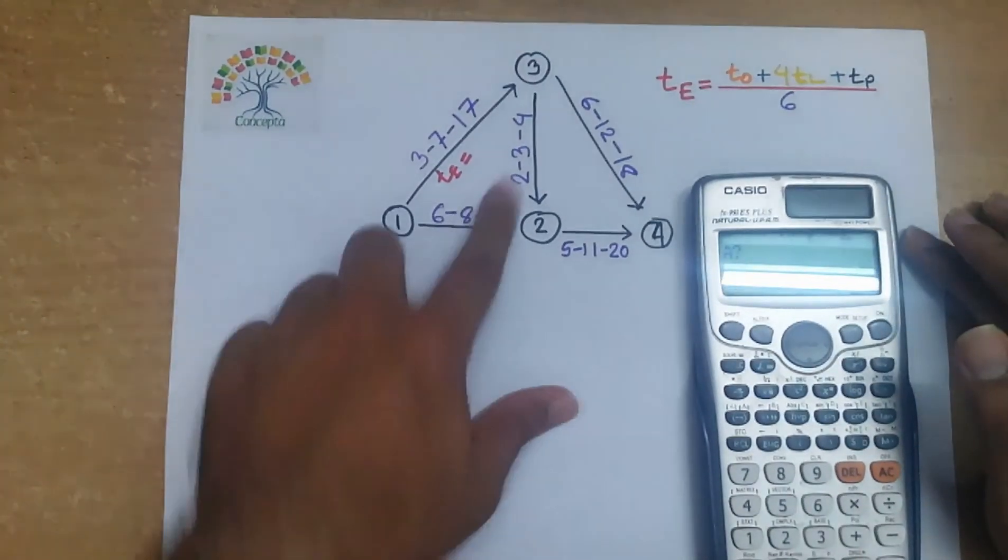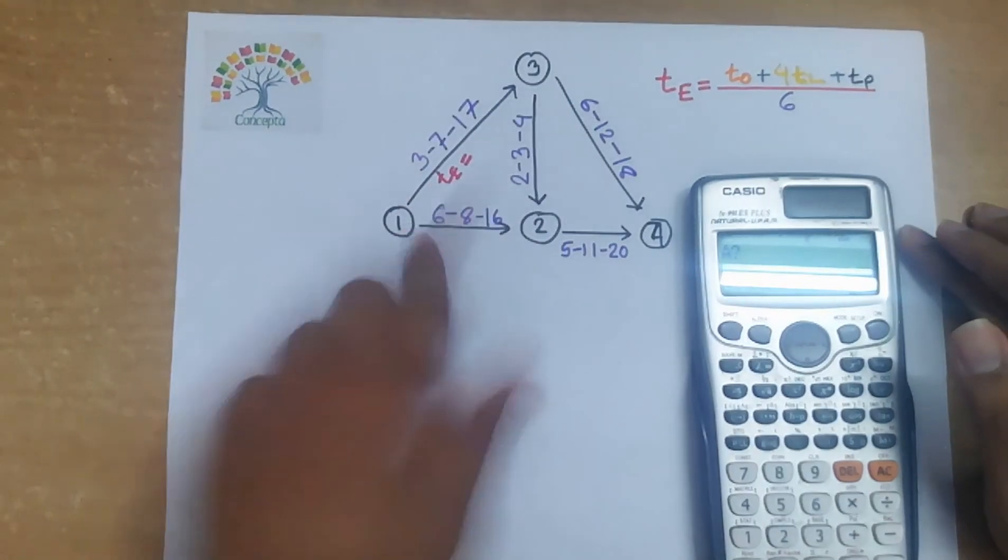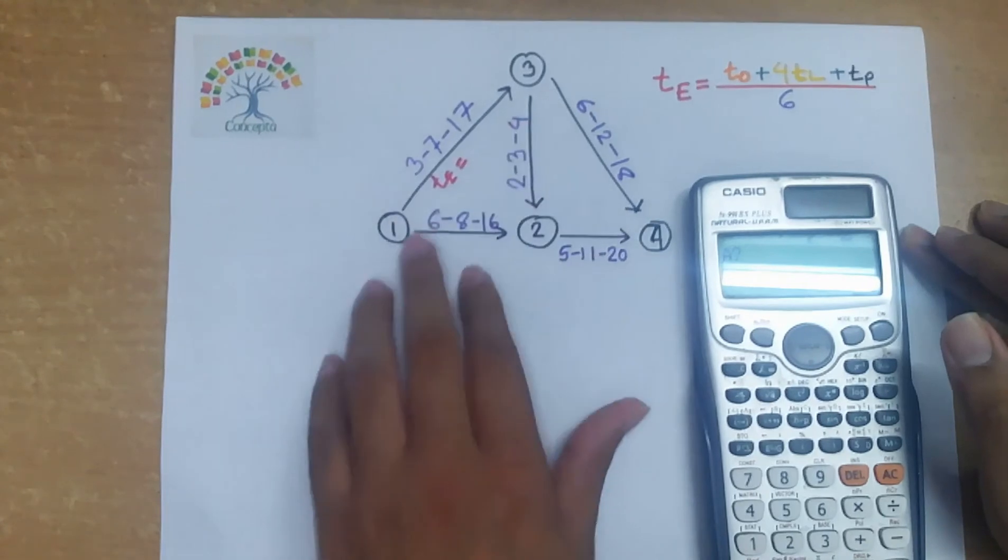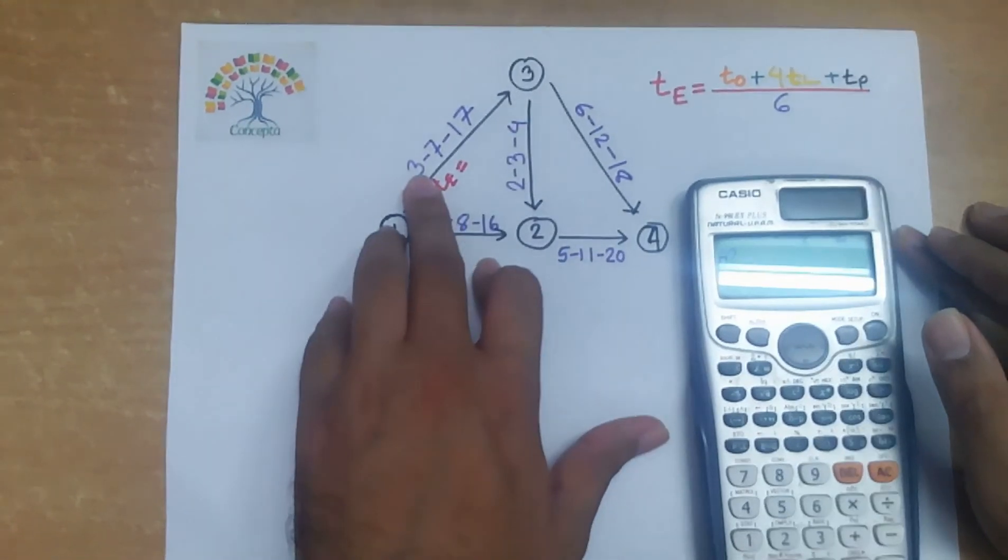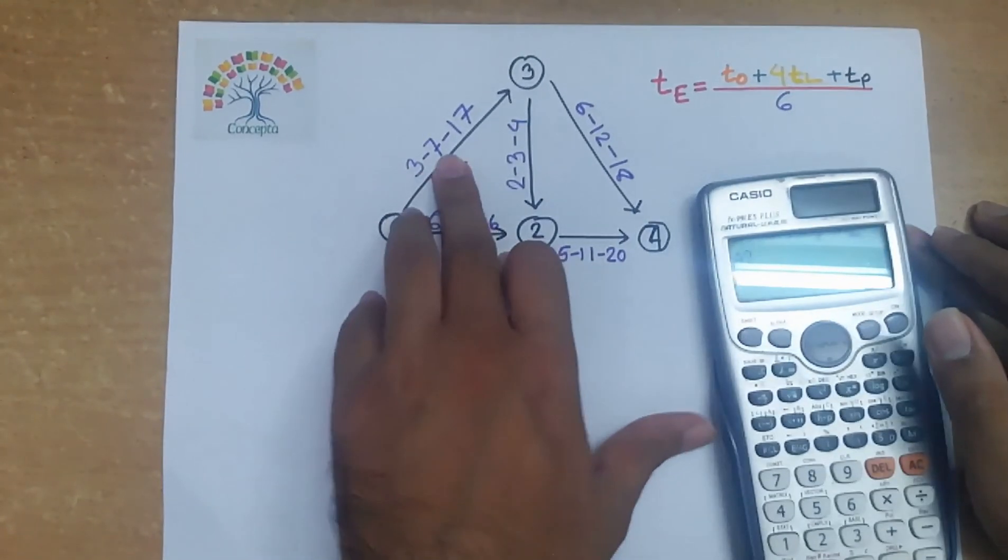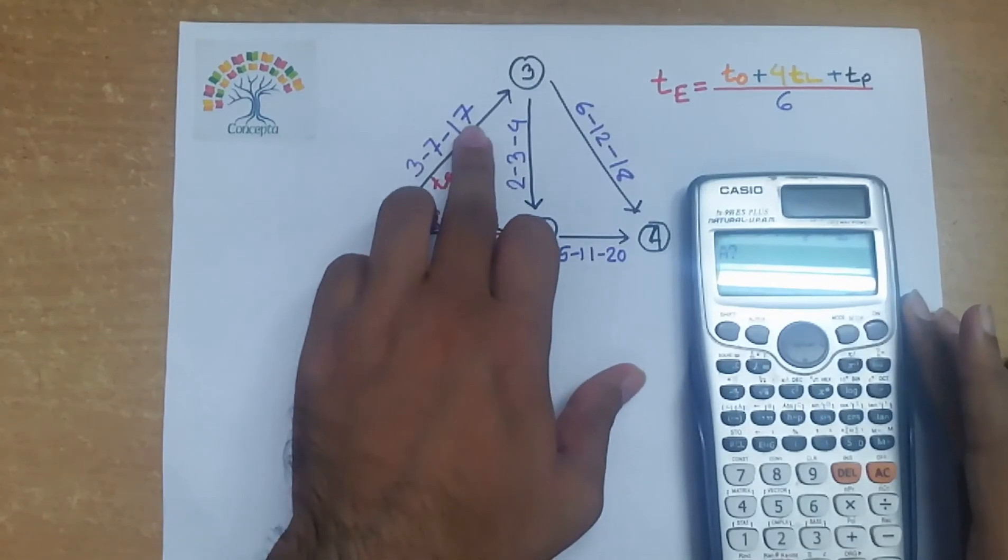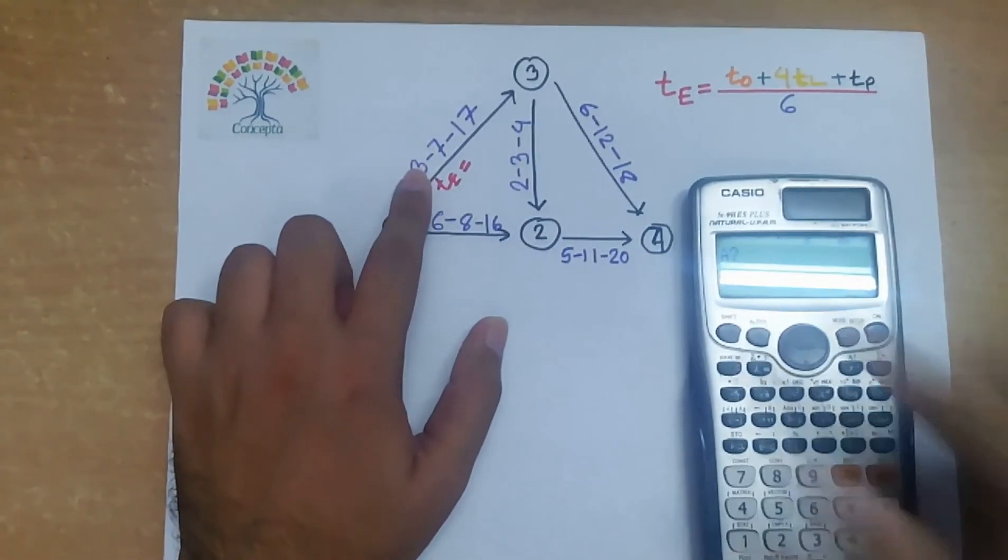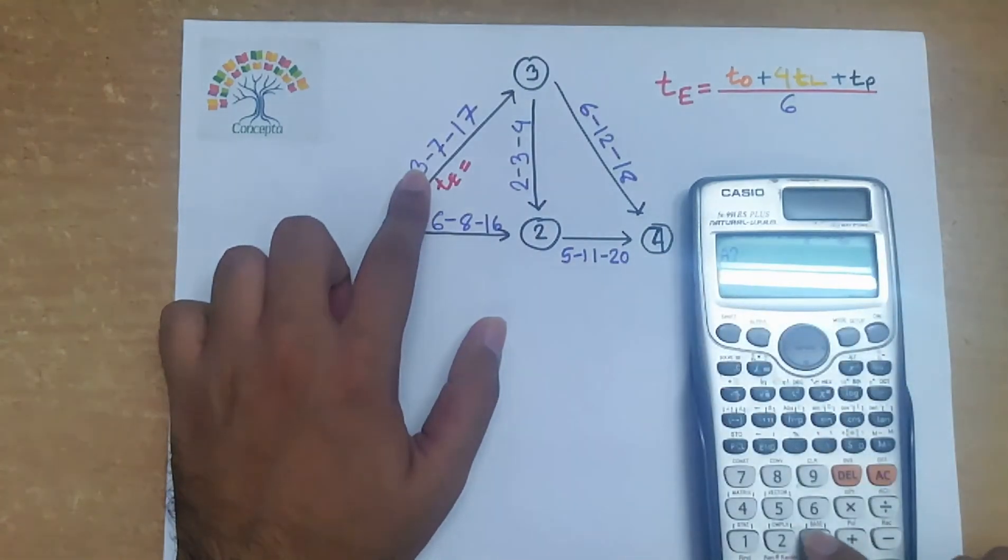So if we observe the PERT network diagram, we see suppose we will find out te for path 1-3. So here 3 represents t0, 7 represents tl, and 17 represents tp. So we will put 3. a equals to what, we will put 3.